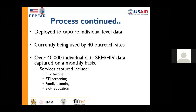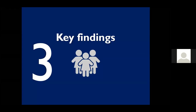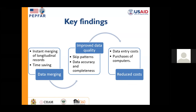In terms of services captured within the tracker, we collect HIV testing data, STI screening data, family planning methods provided to adolescent girls and young women, and sexual and reproductive health services provided at outreach sites. Our key findings can be summarized into three areas. First, instant data merging: using the tracker, we collected data at outreach sites, and DHIS2 tracker has allowed instant merging of longitudinal records — unlike other routine statistical software where the process previously took more than a week.